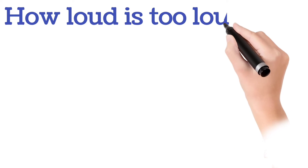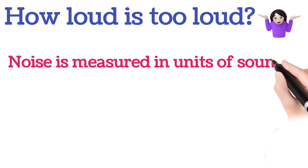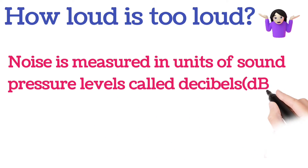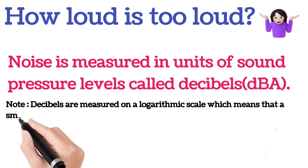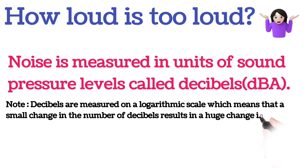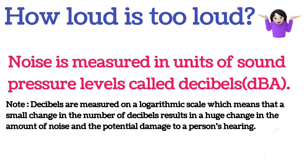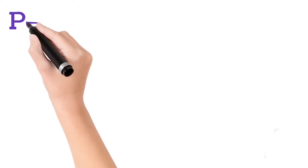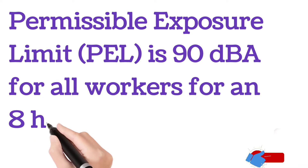Now let's understand how loud is too loud. Noise is measured in units of sound pressure levels called decibels. Decibels are measured on a logarithmic scale, which means that a small change in the number of decibels results in a huge change in the amount of noise and the potential damage to a person's hearing. OSHA's permissible exposure limit (PEL) is 90 dBA for all workers for an 8-hour day.